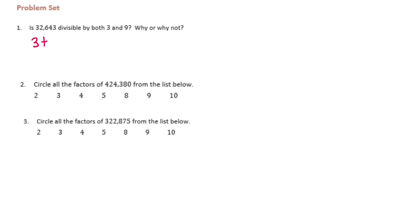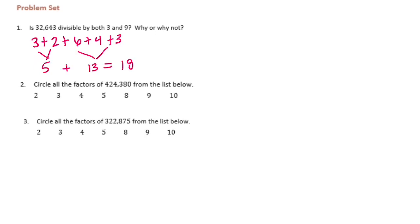3 plus 2 plus 6 plus 4 plus 3. So that's 5. 6 plus 4 is 10, plus 3 is 13. So we have 5 plus 13 is 18. Let's do the divisibility test for 3. 18 divided by 3 is 6, so it is divisible by 3 because we get a whole number when we divide.